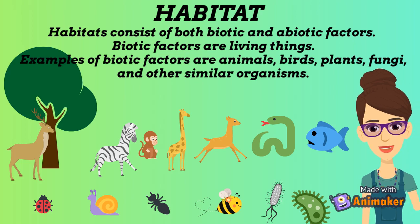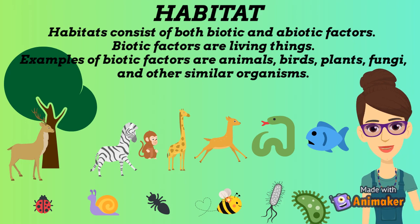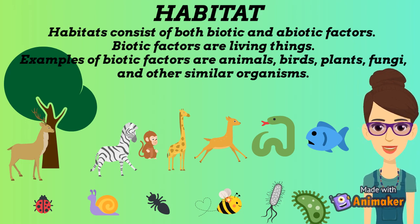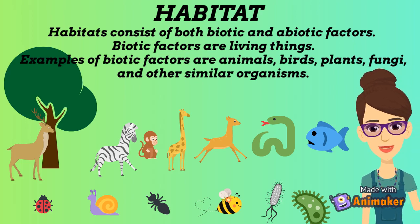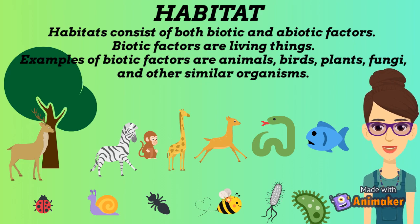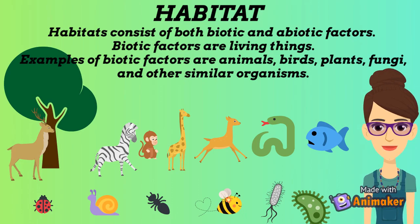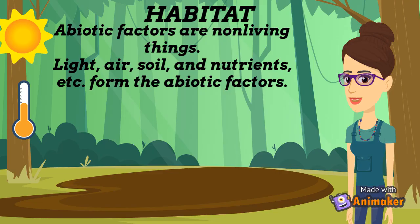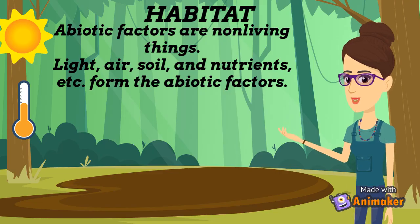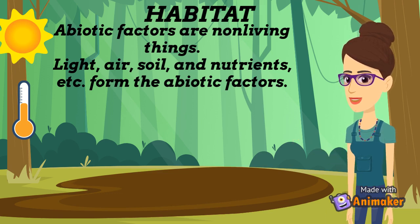Habitats consist of both biotic and abiotic factors. Biotic factors are living things. Examples of biotic factors are animals, birds, plants, fungi, and other similar organisms. Abiotic factors are non-living things. Light, air, soil, and nutrients, etc. form the abiotic factors.